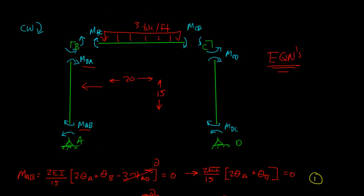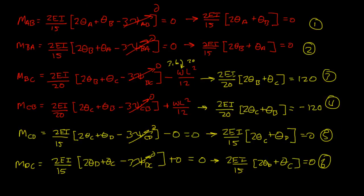Looking back at the diagram, joints B and C are going to be in equilibrium. So that means the moment BA has to equal the moment BC. In other words, the sum of moments about joint B is going to equal zero. And the sum of moments about joint C is going to equal zero. So that actually gives us equations one and two.